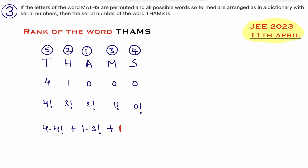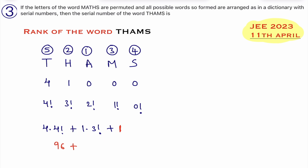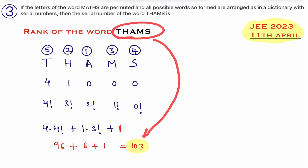At the end we add 1 for the word itself. Now simplify: 4! = 24, so 4 × 24 = 96. Then 1 × 3! = 1 × 6 = 6. Adding: 96 + 6 = 102, plus 1 equals 103. So the rank of the word THUMBS is 103.